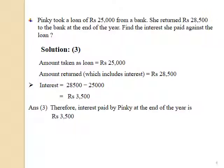Students, in this sum, we have to find out the interest. In order to find out interest, we will subtract the amount of loan taken, that is the principal amount, from the amount returned. So, let's find out interest and solve question number 3. Interest is equal to Rs. 28,500 minus Rs. 25,000, which is equal to Rs. 3,500. Therefore, we can say that interest paid by Pinky at the end of the year is Rs. 3,500.